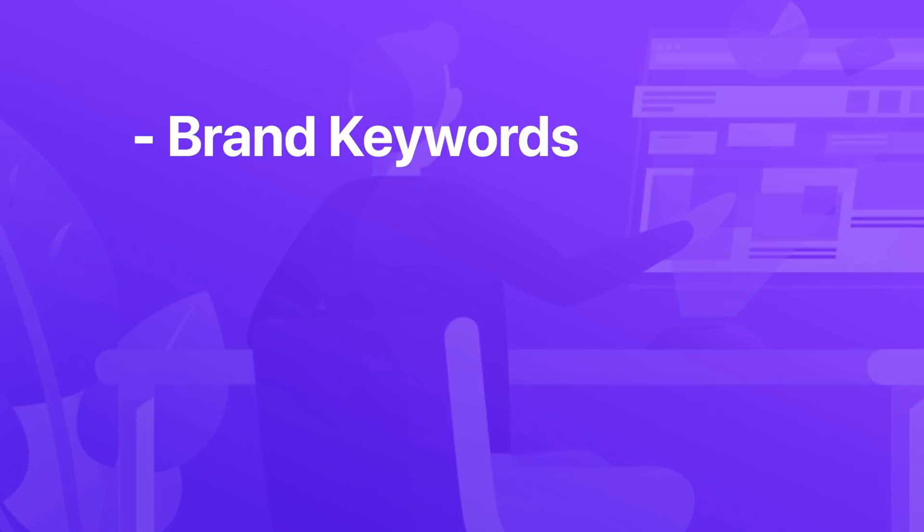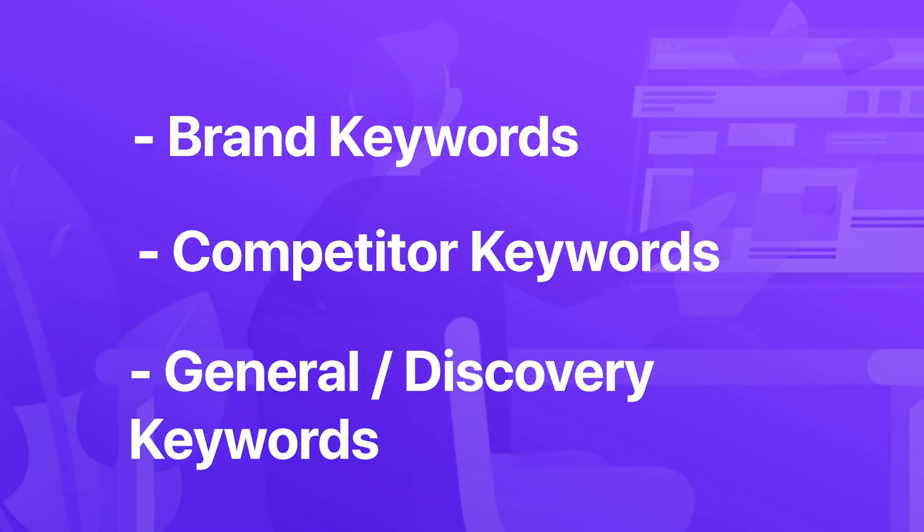One probably quite easy and also easy to implement strategy is to split up your keywords into brand keywords, competitor keywords and general or discovery keywords. Brand keywords quite obviously are targeting ranking for keywords that are related to your brand. It might be your name or it might be the name of your company.